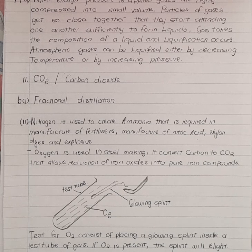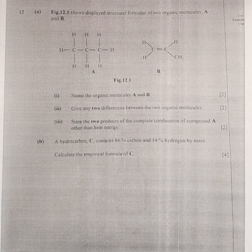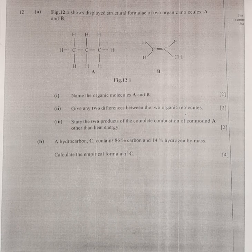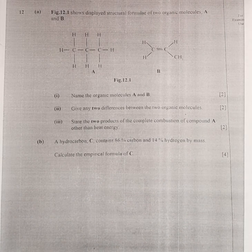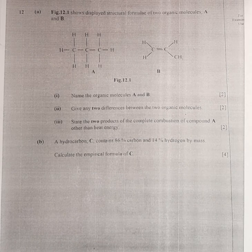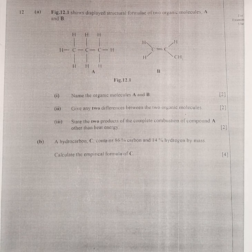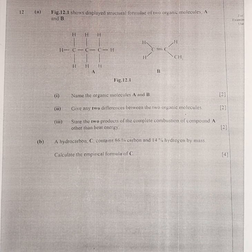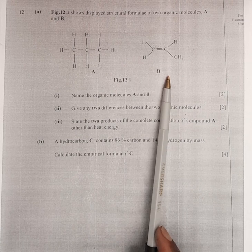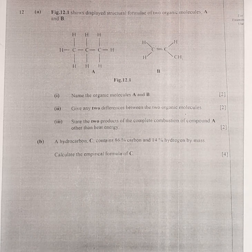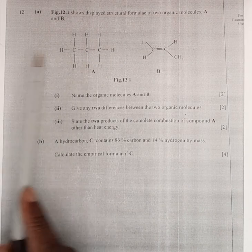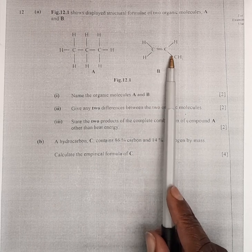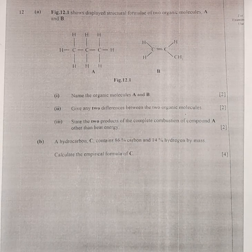Let's move on to number 12. Number 12 is a question on organic chemistry — my favourite topic in chemistry at school, along with biochemistry. Number 12A: Fig 12.1 shows the displayed structural formulae of two organic molecules, A and B. Name the organic molecules A and B. A is propane and B is propene. Propane is an alkane with three carbons and eight hydrogens, and propene is an alkene with three carbons and six hydrogens.